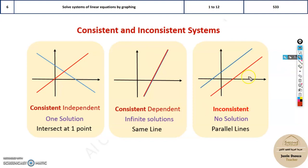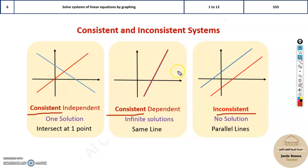Before we see these cases, let's talk about the words consistent and inconsistent. Consistent means having a solution — it may be 1, 2, or infinite. Whereas inconsistent means without solution.